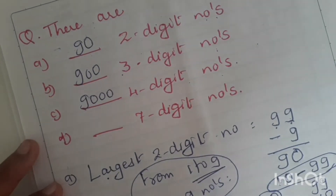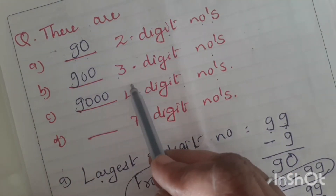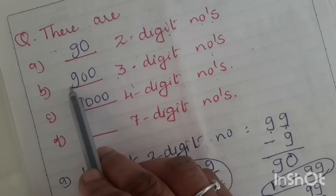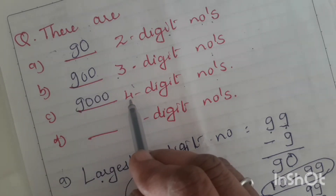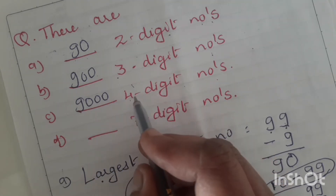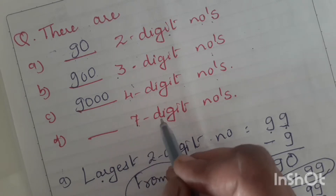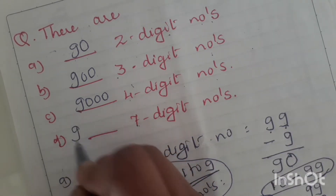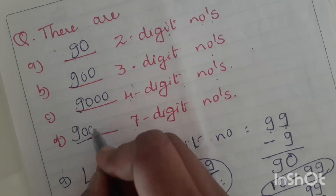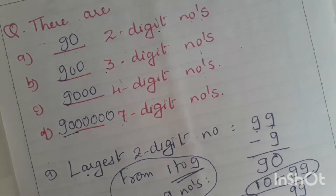Now check the pattern: 2-digit numbers — you have 90. 3-digit numbers — 900, that is 9 followed by 2 zeros. 4-digit numbers — 9 followed by 3 zeros. So when asked how many 7-digit numbers there are, you write 9 followed by 6 zeros — that is 9,000,000.